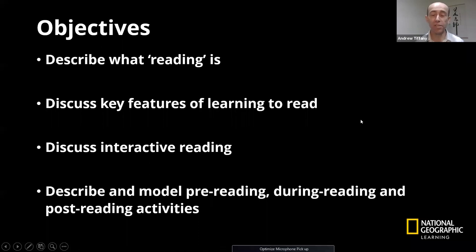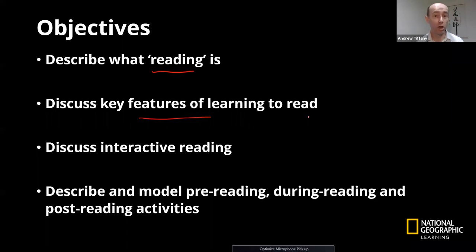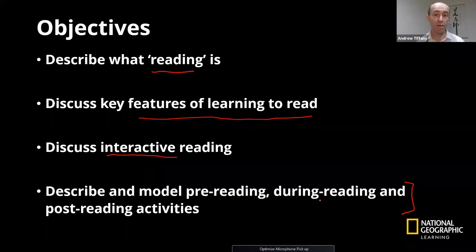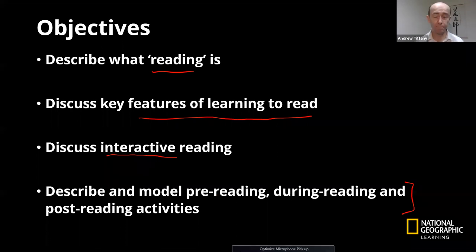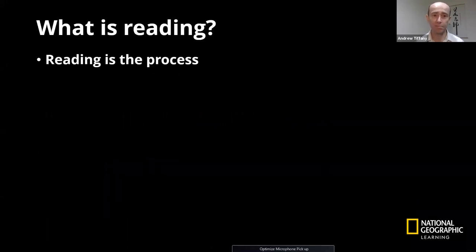So let's take a look at what we're going to do today. We're going to talk about reading for young learners — usually grades one to six. We're going to talk about what reading is, some key features of learning to read, and what's involved when we learn the skill of reading. We're going to talk about interactive reading, and then spend quite a bit of time talking about different ways to develop pre-reading, during-reading, and post-reading activities that will really help your learners get the most out of reading.